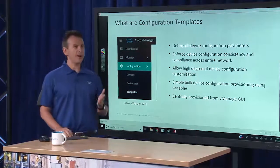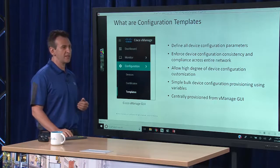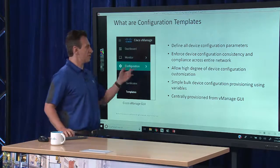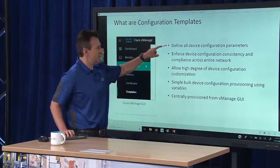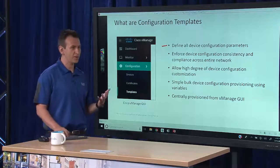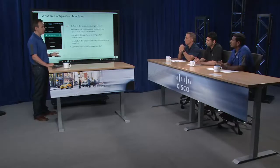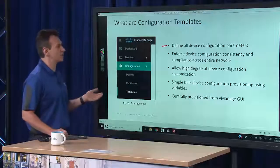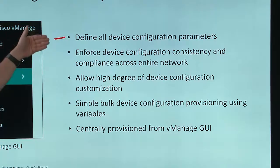First it's important to define what device configuration templates are. There are a couple of uses for device configuration templates within our solution. First and foremost, just as the name suggests, it's the ability to define all of the configuration parameters for the devices that participate in the SD-WAN fabric. We're going to talk about different types of configuration templates — some apply to the routers, some to the controllers, some to the management system itself.